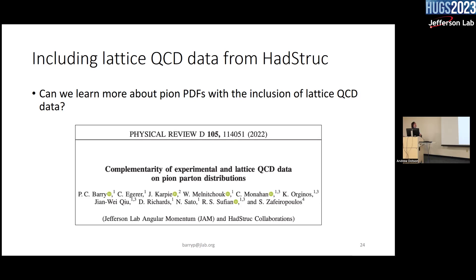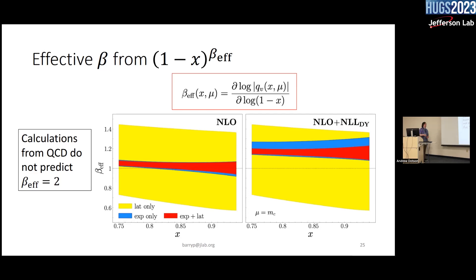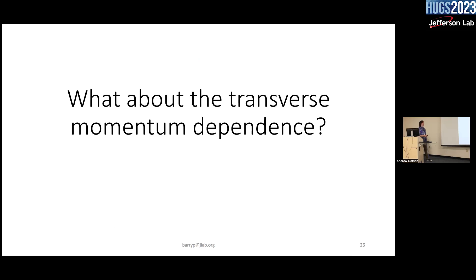We also included lattice QCD in the global analysis. Even from the ab initio lattice calculation with systematic corrections, looking at lattice data alone gives a beta_effective not close to two — still consistent with one. When we combine experimental data plus lattice, the results using NLO Drell-Yan and NLO plus next-to-leading-log threshold resummation show large consistency with each other and with the lattice, all supporting a (1-x)^1 behavior.